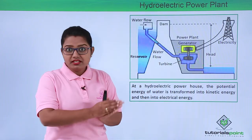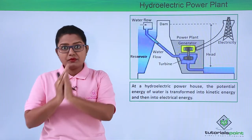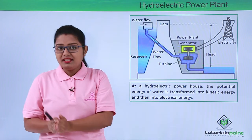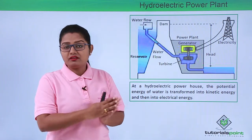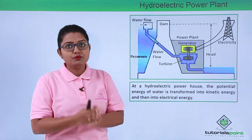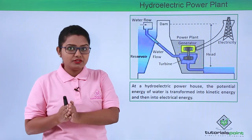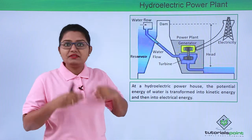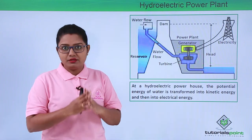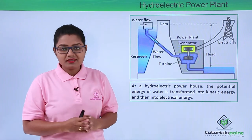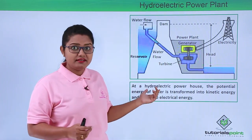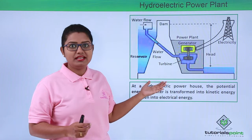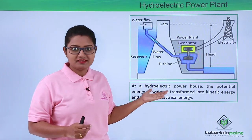So there were totally two transformations of energy in this hydroelectric power plant. First, the potential energy was converted to kinetic energy. Then the kinetic energy of water was converted to electrical energy, which we can use in our day-to-day life. This is how electricity is generated from a hydroelectric power plant.